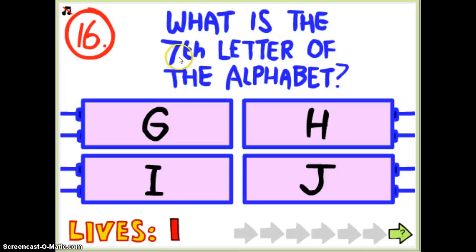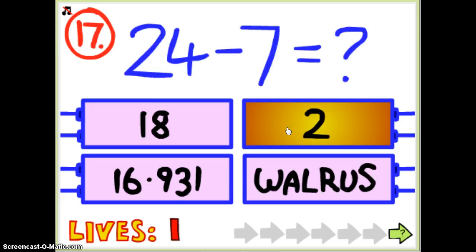Do they mean the seventh letter of the alphabet? One, two, three, four, five, six, seven, it's H. Well, it's 24 minus three, I mean seven.